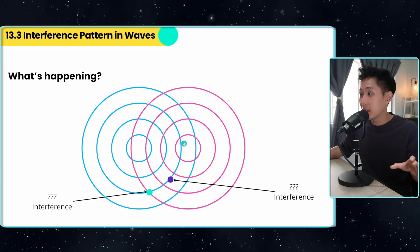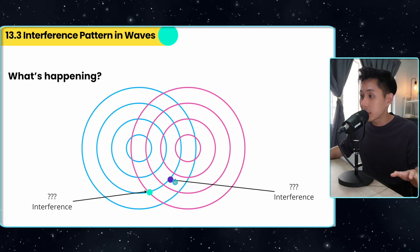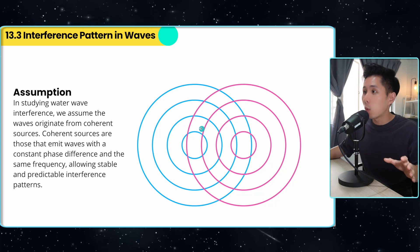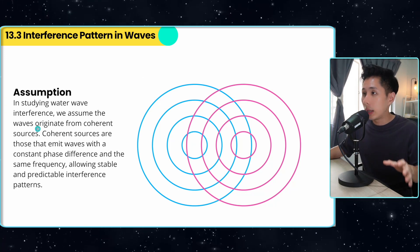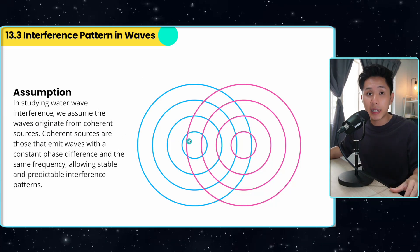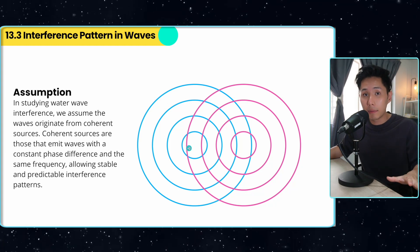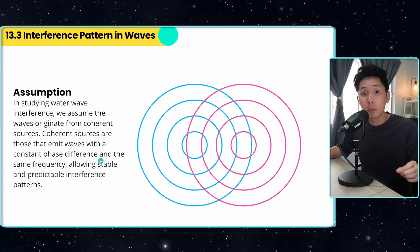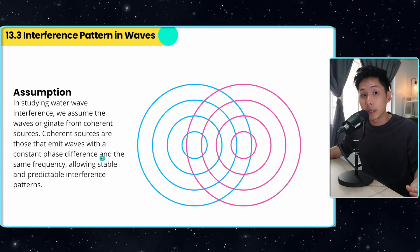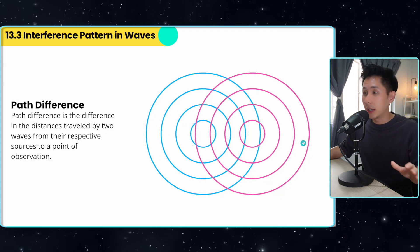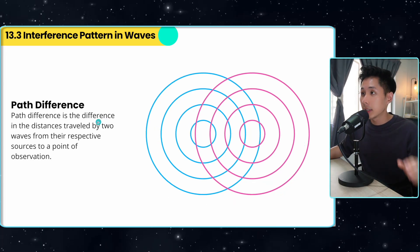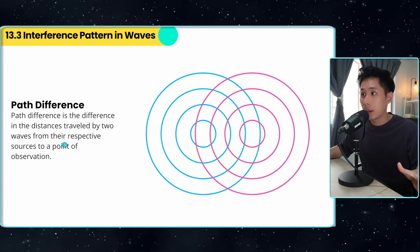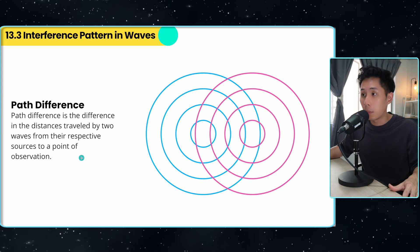The goal of this lesson is so that you can identify whether constructive or destructive interference has occurred at specific spots. When studying water waves, we assume that waves originate from coherent sources, meaning the source generating the blue wave and the source generating the pink wave are producing waves of the same frequency and the same phase difference. Now let's look at another term: path difference. It is the difference in distances traveled by two waves from their respective sources to a point of observation.